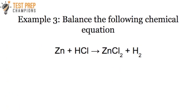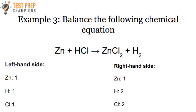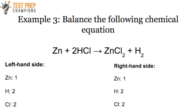Example three: balance Zn + HCl → ZnCl2 + H2. On the left I count one Zn, one H, and one Cl. On the right: one Zn, two H's, and two Cl's. I'm going to leave the H2 and Zn alone since they're the simplest. My first move is to put a 2 in front of HCl — we only have one Cl and one H on the left but need two of each. By doing that, it looks like that balanced us up.